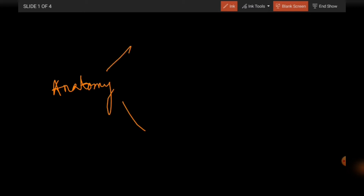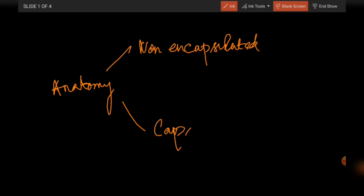Then we have the anatomical classification of Receptors. By anatomy, they are classified into two types based on the presence or absence of a capsule around them — that is, non-encapsulated and encapsulated. Non-encapsulated receptors are free nerve endings.